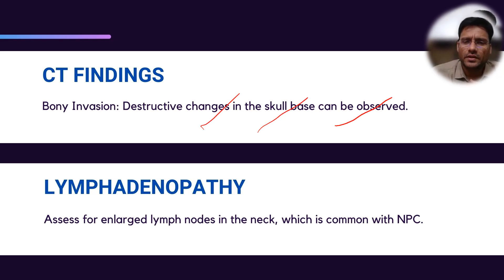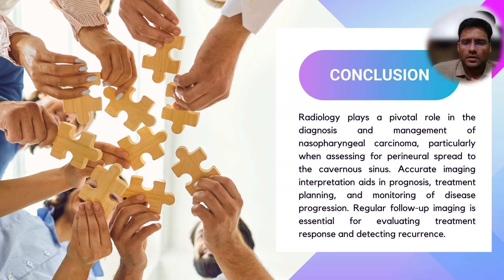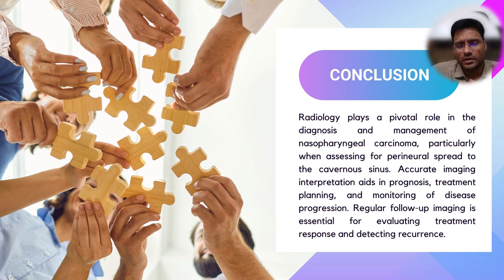CT will add value to look at skull base destruction and foraminal widening. MRI can assess lymphadenopathy which further supports the diagnosis. In conclusion, in an elderly male with a cavernous sinus mass, skull base mass, or any mass around the foramina, always look for perineural spread of tumors. Hope this video on perineural spread of tumors of the skull base and head and neck region was useful. Thank you very much.